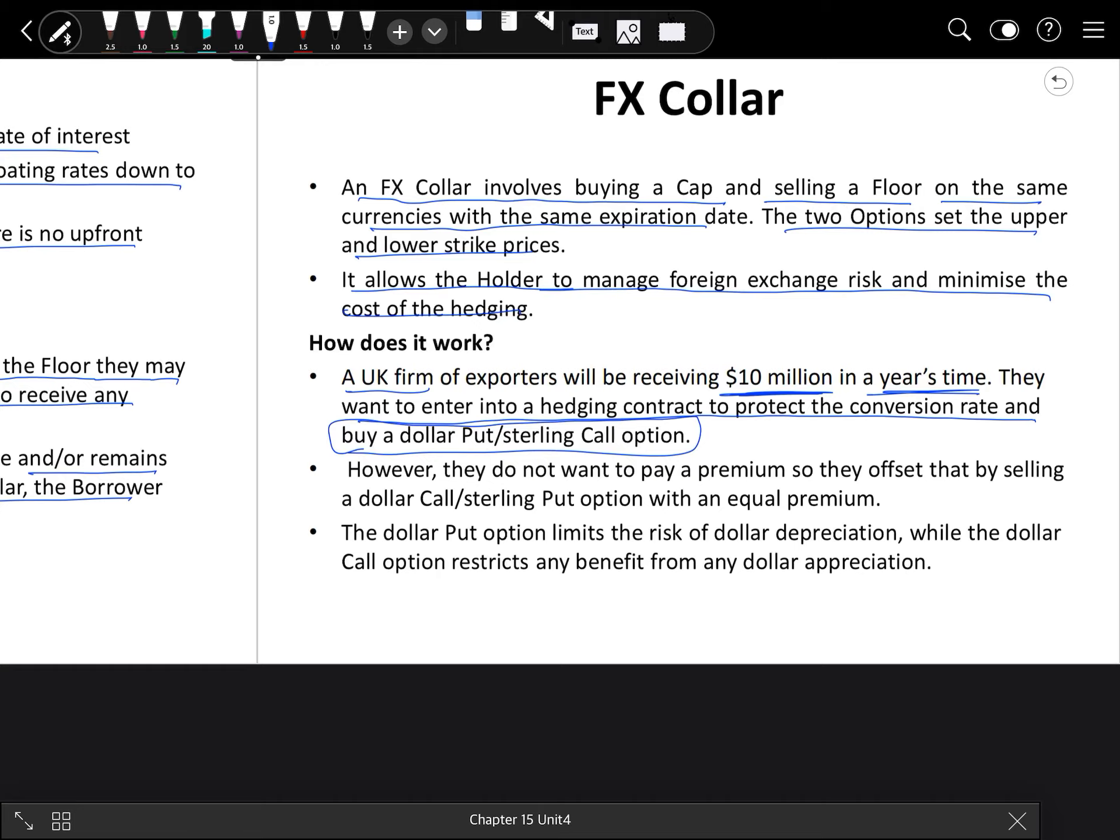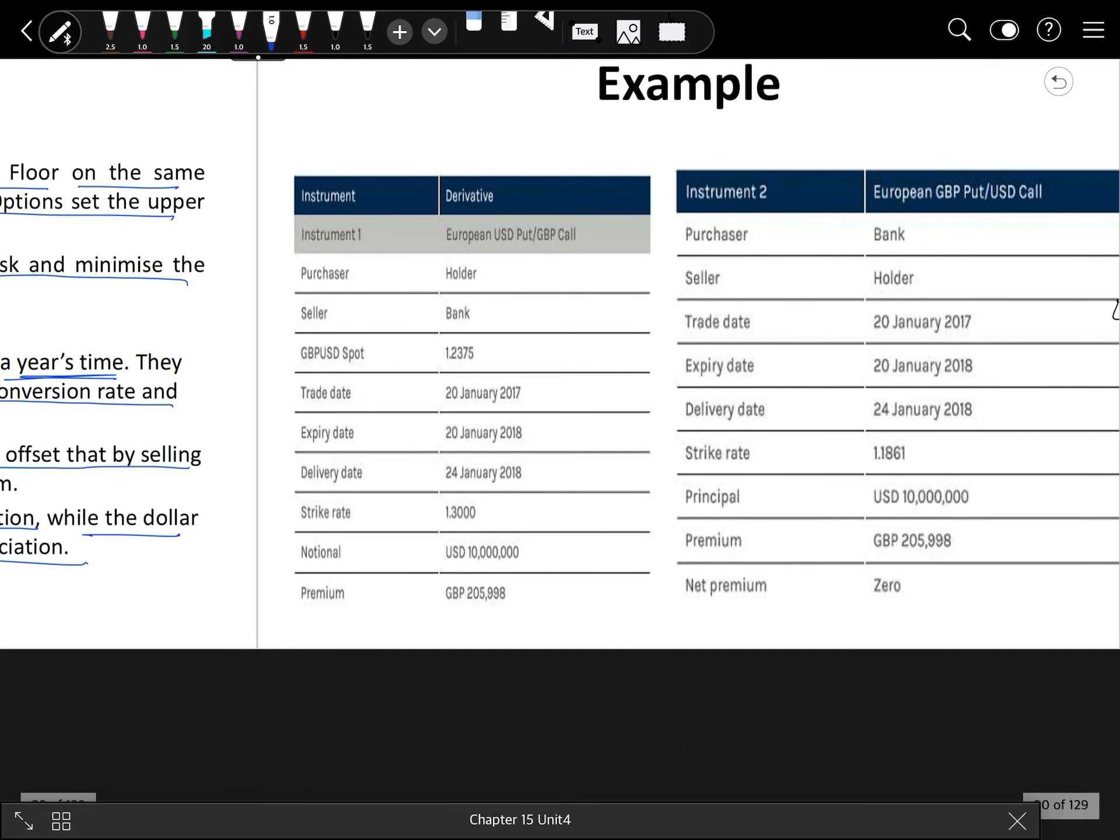The dollar put option limits the risk of dollar depreciation, while the dollar call option restricts any benefit from dollar appreciation. In this case, the net premium will be zero because in one case he is paying the same amount and in the other case he is receiving the same amount.